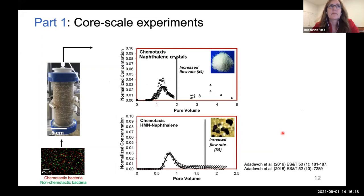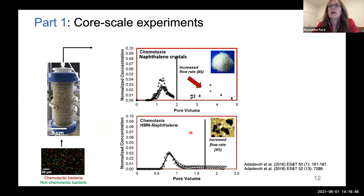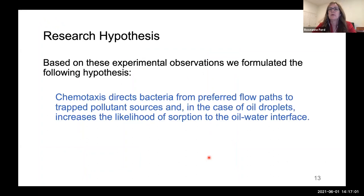Once the primary peak eluted from the column, the fluid velocity was increased five times, and then a second peak eluted from the column with naphthalene crystals as the source — presumably releasing bacteria that had been drawn toward the naphthalene crystals and retained at the lower fluid velocity. For the oil phase naphthalene sources, it appears that the chemotactic bacteria became irreversibly absorbed at the oil-water interface and did not release even at the higher flow rate. Based on these observations, we formulated the hypothesis that chemotaxis directs bacteria from preferred flow paths to trapped naphthalene sources and, in the case of oil droplets, increases the likelihood of absorption to the oil-water interface.